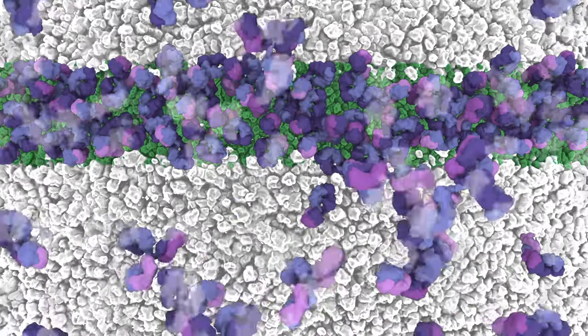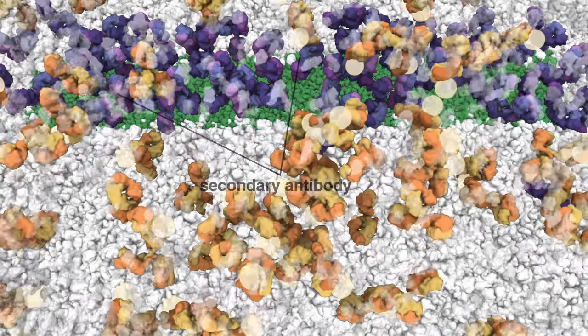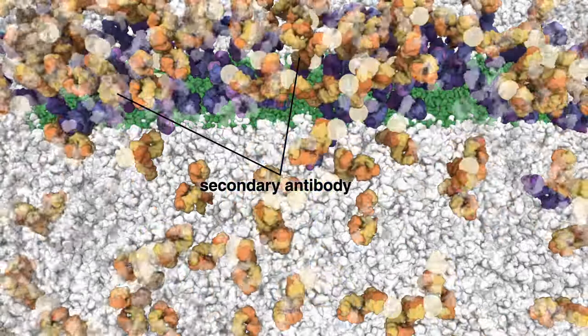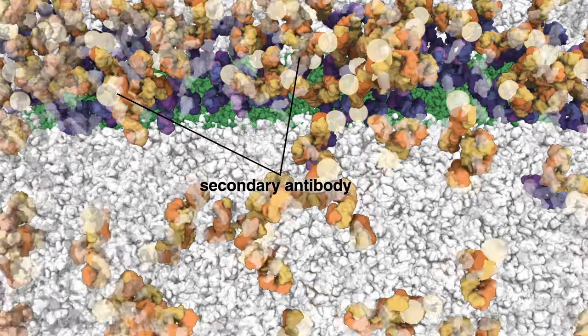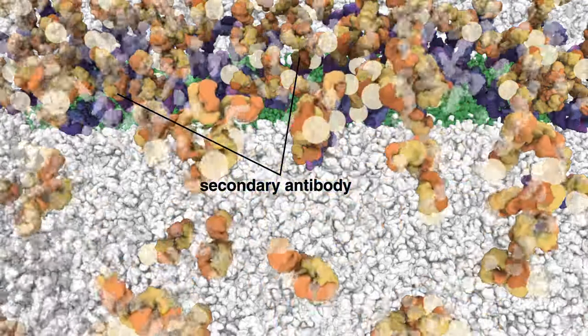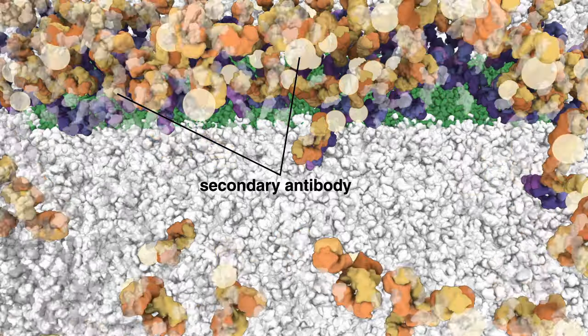After washing the membrane to remove unbound primary antibody, the membrane is incubated with a secondary antibody, which recognizes the type of primary antibody used. As with the primary antibody incubation, incubation with a secondary antibody is performed in the presence of blocking solution, followed by a series of washes.